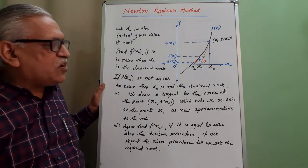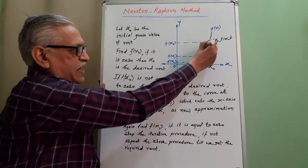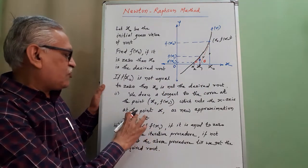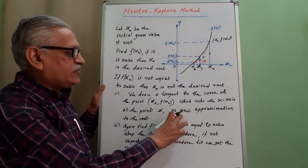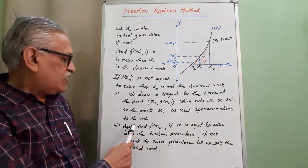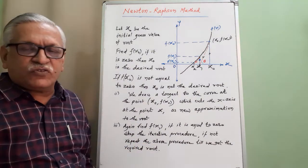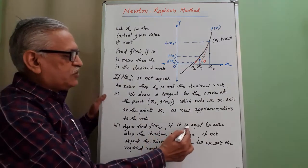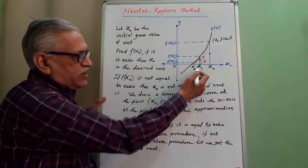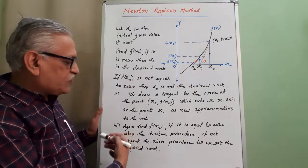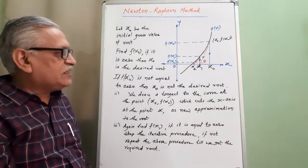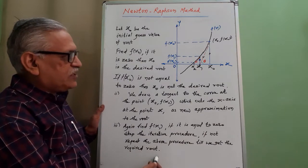At the point (x₀, f(x₀)), we draw a tangent to the curve. That tangent meets the x-axis at a new point x₁, which is the new approximation for the root. If f(x₀) = 0, we get the desired root. If not, we draw the tangent and move to x₁. We then check whether f(x₁) = 0. If it equals 0, we stop and call that value the root. If not, we repeat the same procedure until we get the desired root.